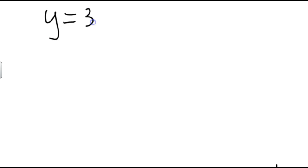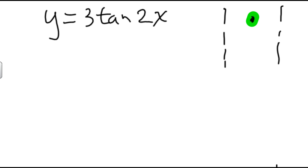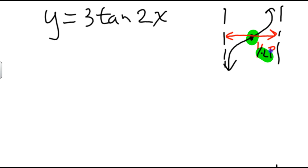Now let's do a tangent graph. Suppose I have y equals 3 tangent of 2x. For tangent graphs, the main focus is a center point with asymptotes on each side of it, and a smooth S-curve that goes from asymptote to asymptote. The period starts on one asymptote and goes across to the other, so I need half a period to the right of the center point and half a period to the left to locate my asymptotes.